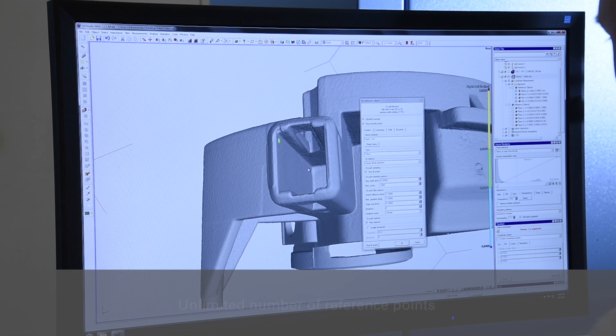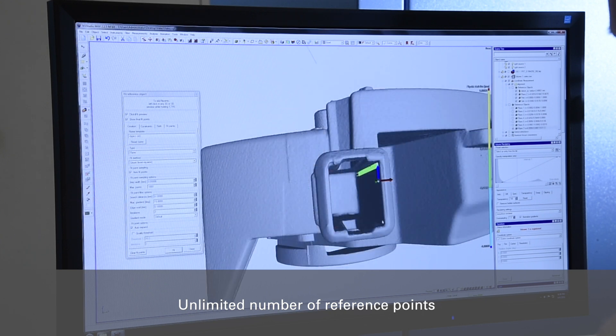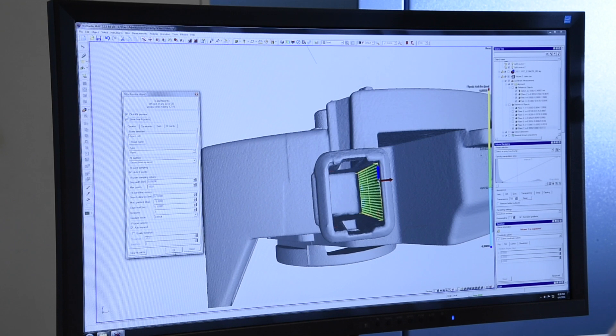An almost unlimited number of reference points can be used to measure the complete part. You can add internal measurements for cavities and material interfaces in hybrids and assemblies.